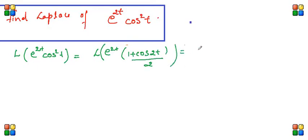So this can be written as half times L of e raised to 2t plus half times L.